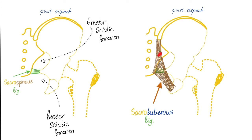There is another ligament here called the sacrotuberous ligament — sacrum to tuberosity. It attaches to the lateral border of the sacrum and the posterior segment of the iliac crest of the ilium, and here it's attached to the ischial tuberosity. That's why it's called the sacrotuberous ligament.